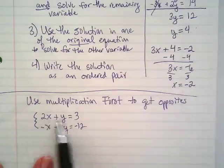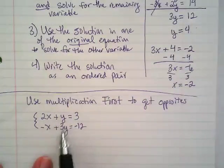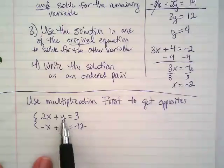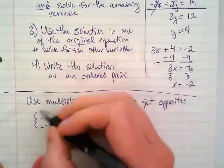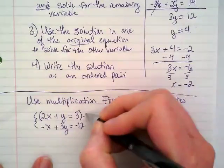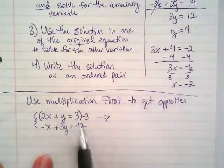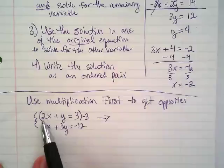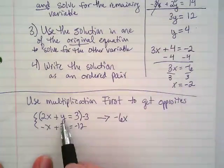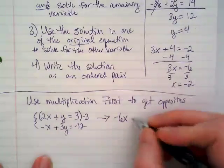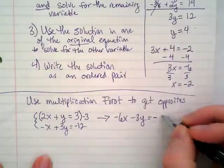I could either multiply this first equation here by negative 3, because if I do that, I'm going to get a 3y here and a negative 3y up there. So, let's do that. We're going to multiply this equation by negative 3. And it's going to change over here. Negative 3 times 2x would be negative 6x. Negative 3 times y would be negative 3y. And 3 times negative 3 would be negative 9.